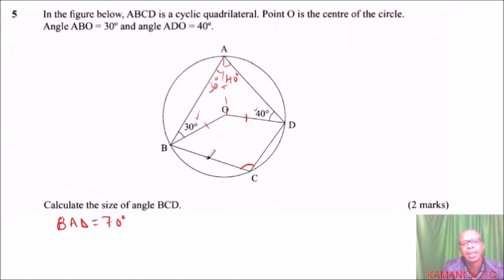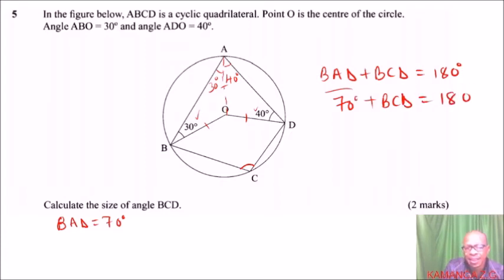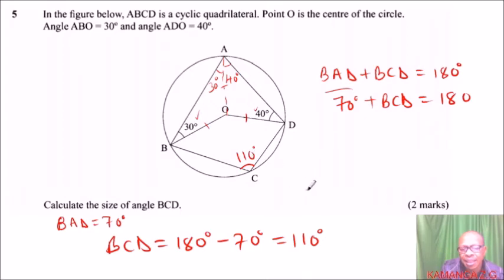Another property that we know is that the opposite angles of a cyclic quadrilateral add up to 180. That is, if we add BAD, you add to BCD, this should add up to 180. And, already, we know BAD. So, this, we have said it is 70, plus BCD is equals to 180 degrees. BCD is 180 degrees minus 70 degrees, and that should give you 110 degrees. So, this angle here is 110 degrees, and that is how you work out that question. You will be able to get yourself two marks.